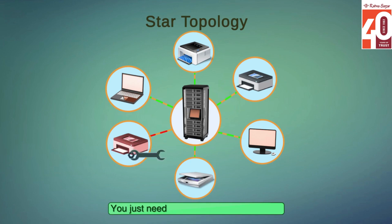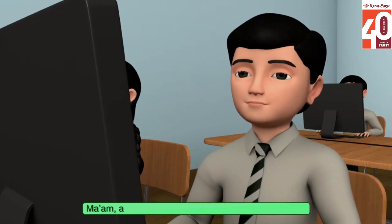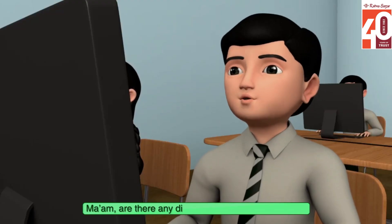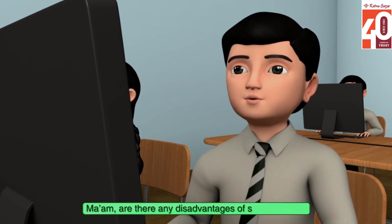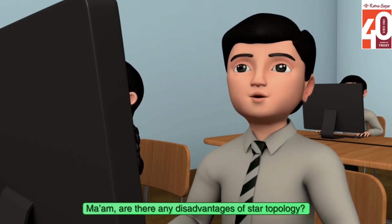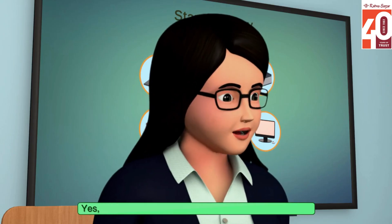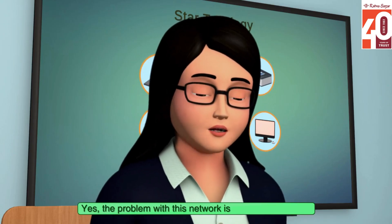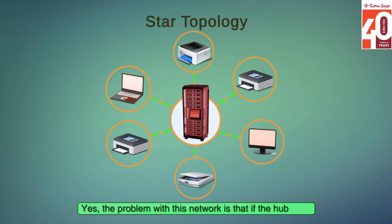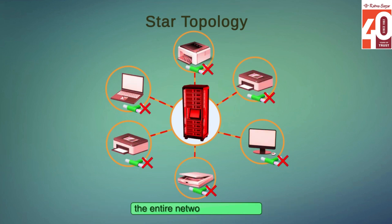You just need to fix the faulty connection. Are there any disadvantages of star topology? Yes, the problem with this network is that if the hub fails, the entire network goes down.